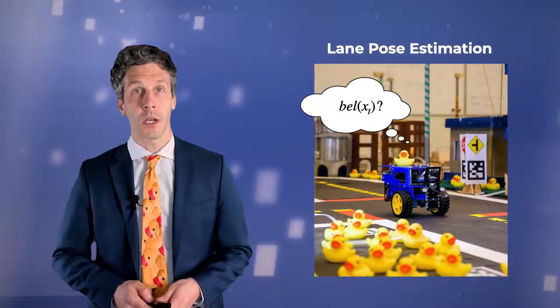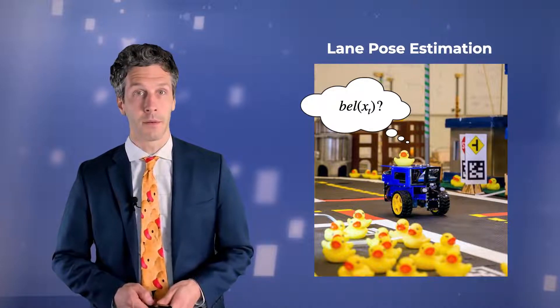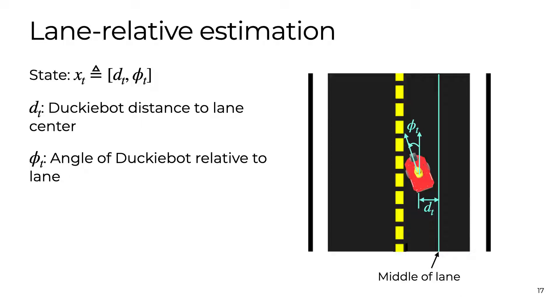Let's see how this would work with an example. Here's our DuckyBot sitting on the road in DuckyTown. For now, we are only going to concern ourselves with the DuckyBot's angle relative to the lane and its orthogonal distance to the center of the lane.